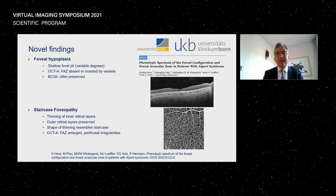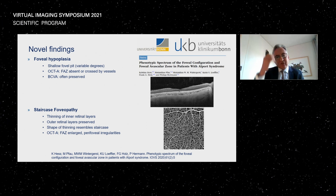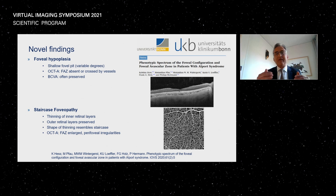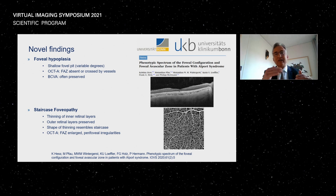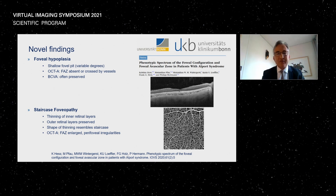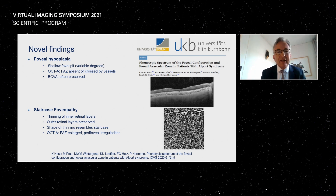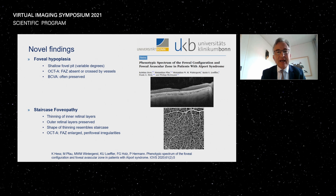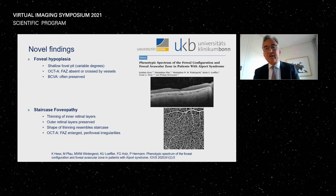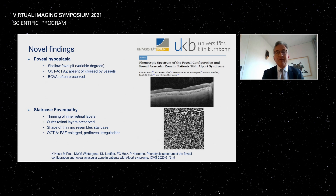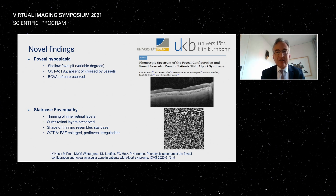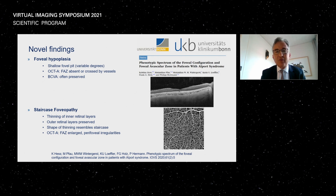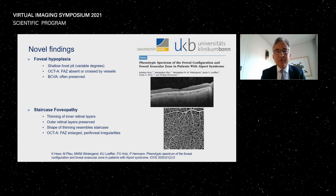Another sign seen with the Spectralis is the so-called staircase foveopathy — basically the loss of tissue in the inner retinal layer giving rise to a bumpy inner surface of the retina. This is readily shown by structural OCT imaging, and if you see this in patients, also look at the foveal configuration with OCT angiography, which may then point towards foveal hypoplasia.